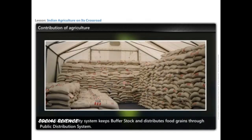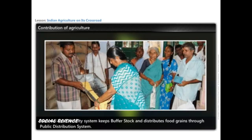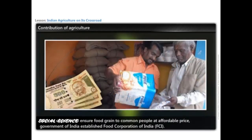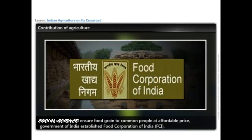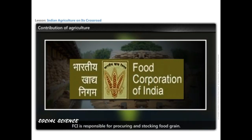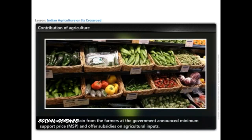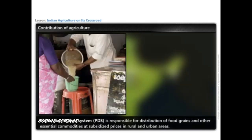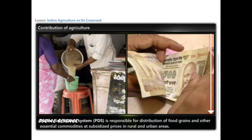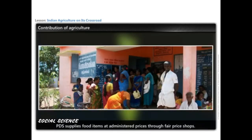The National Food Security System keeps a buffer stock and distributes food grains through the Public Distribution System (PDS) to ensure food grains at affordable prices. The government established the Food Corporation of India (FCI), which is responsible for procuring and stocking food grains. FCI procures food grains from farmers at the government-announced Minimum Support Price (MSP) and offers subsidies on agricultural inputs. PDS is responsible for distributing food grains and essential commodities at subsidized prices through fair price shops in rural and urban areas.